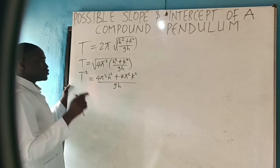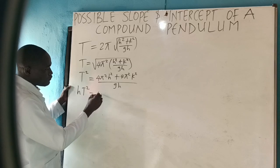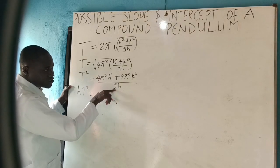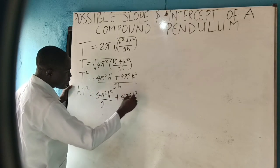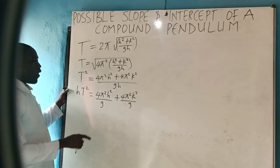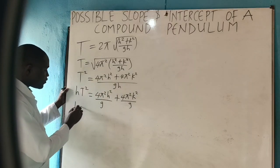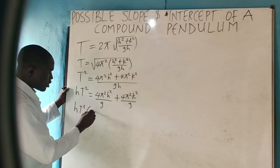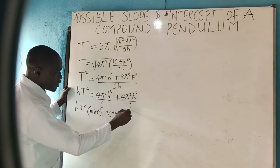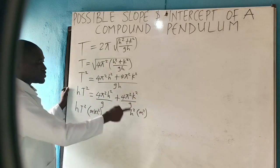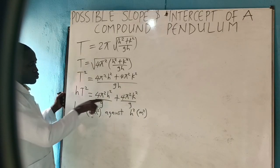Taking h to this side, we have hT squared equals four pi squared h squared over g, plus four pi squared k squared over g. We take h to this side because in that video we were asked to plot a graph of hT squared — that is, meter second squared — against h squared, that is meter squared. So this is the graph we are asked to plot.